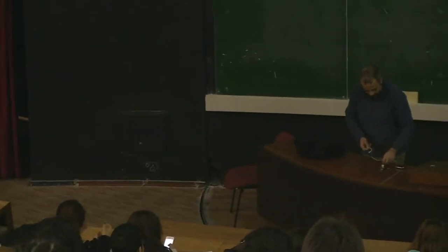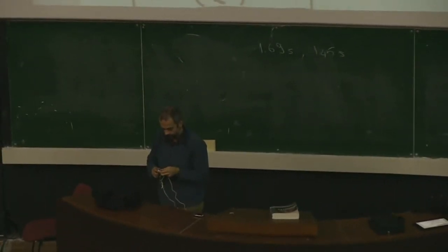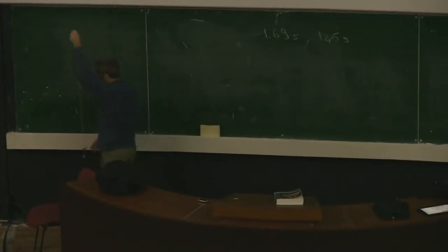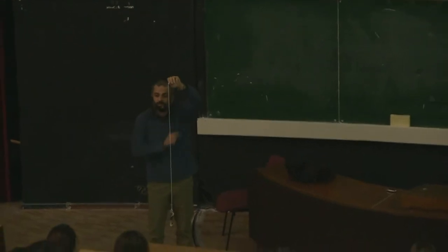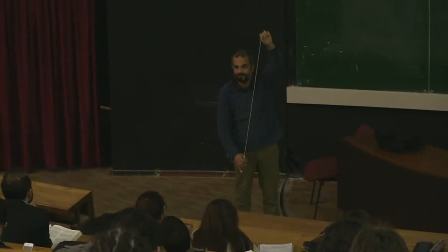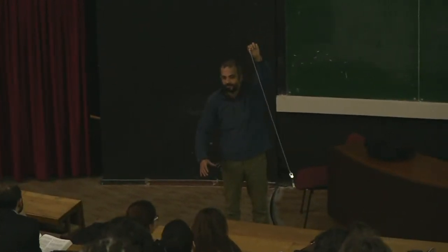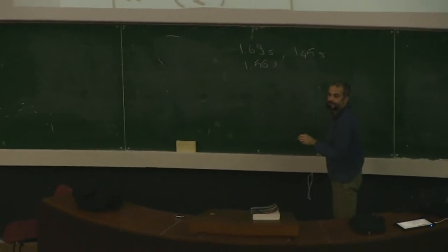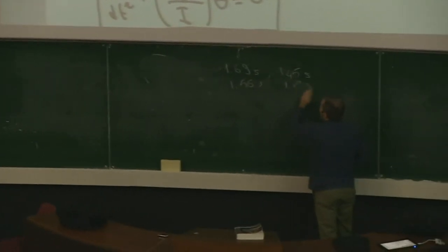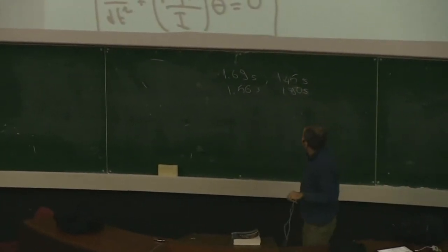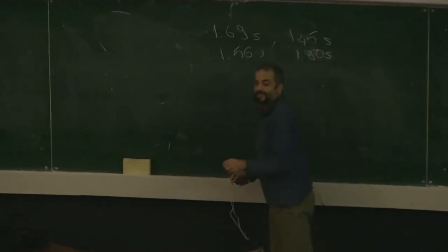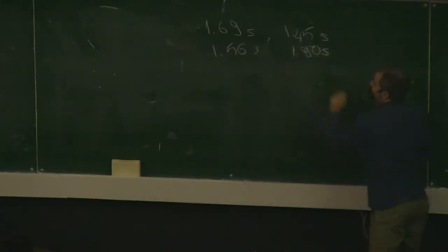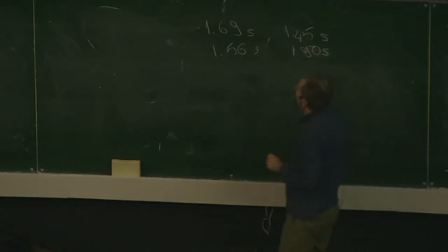So let us make a change in our system. Let us add some more mass. So let's see how this period — this is the period of the oscillation. After this period it will just repeat itself. Are you ready? Start. Stop. 1.56 and 1.19.